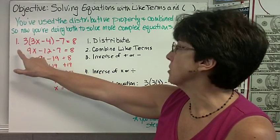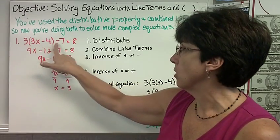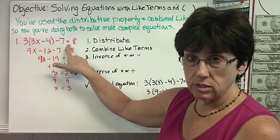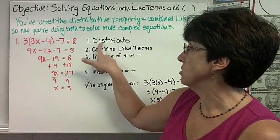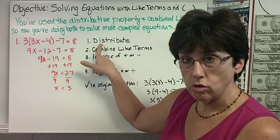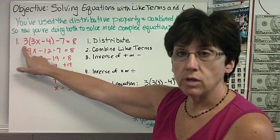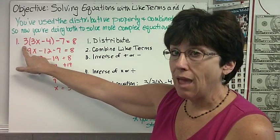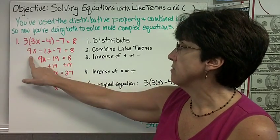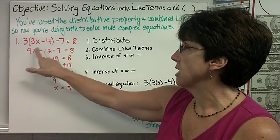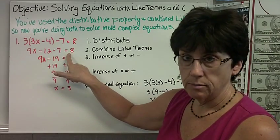Here's our first equation: 3 times the quantity of 3x minus 4, minus 7, equals 8. When you look at your equation and see parentheses, you know the first thing you need to do is distribute — multiplying the number on the outside of the parentheses with every term inside. This gives us 9x minus 12 minus 7 equals 8.